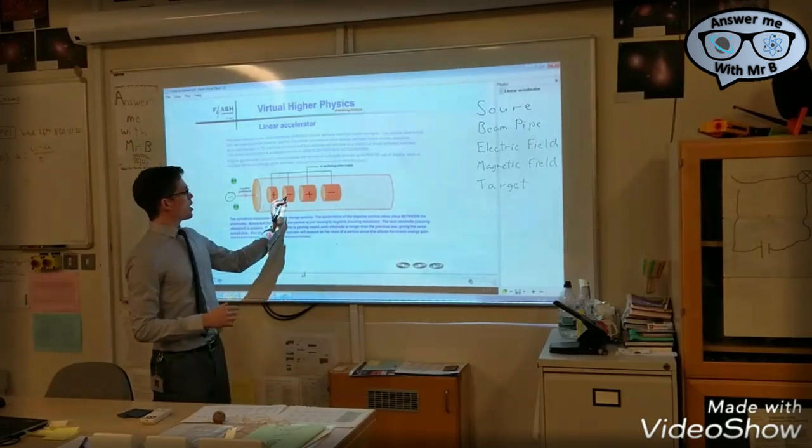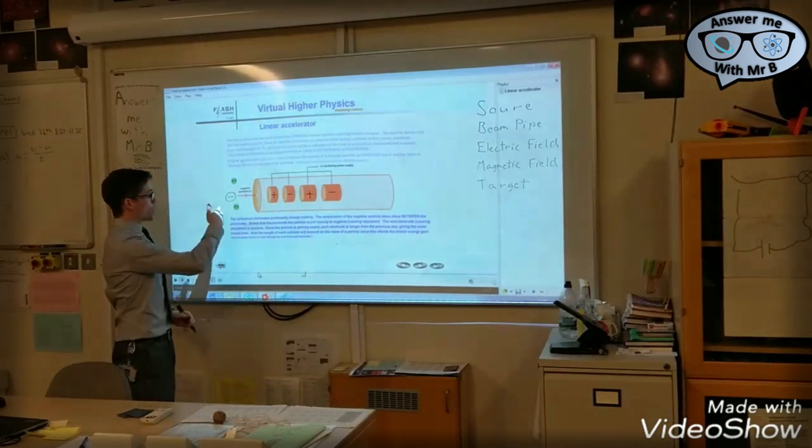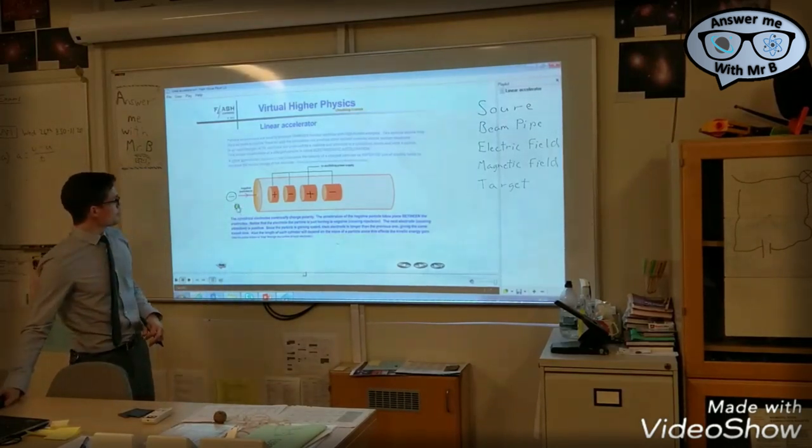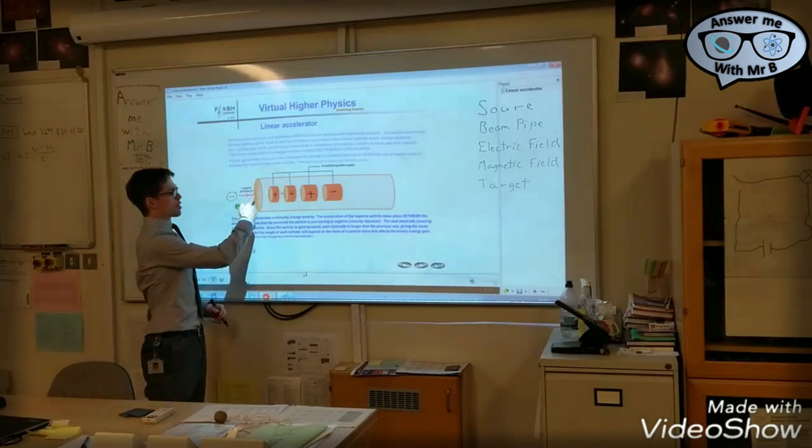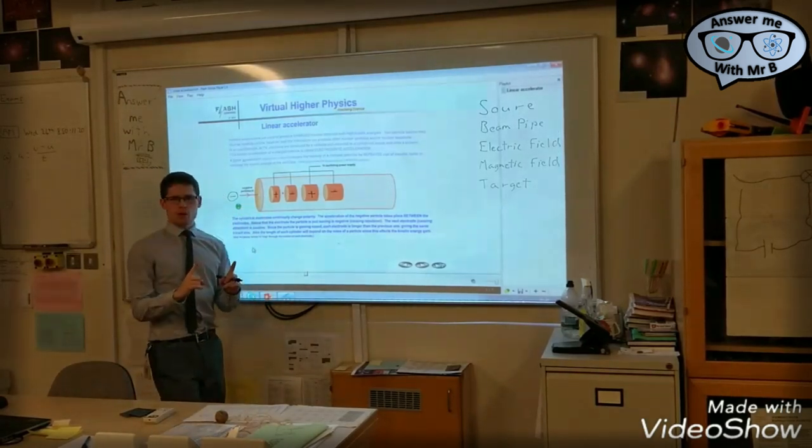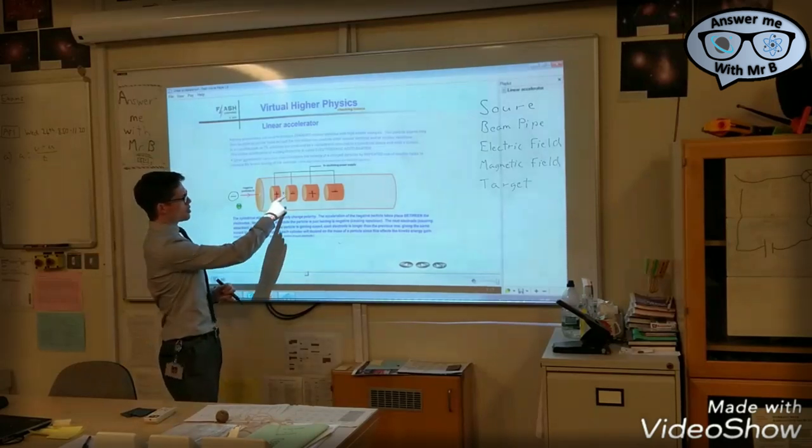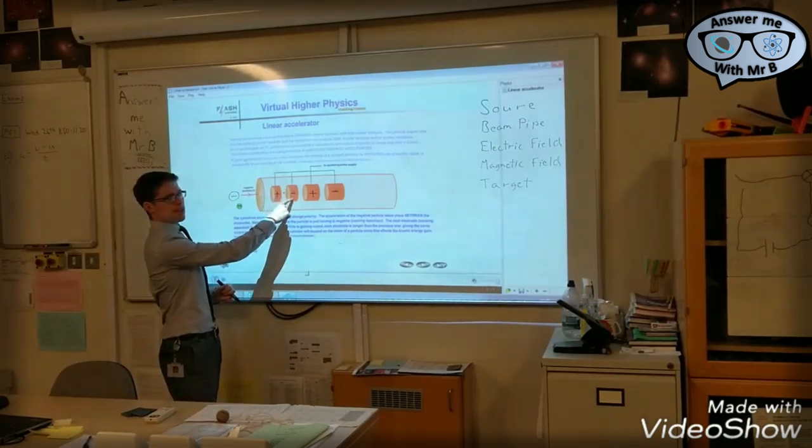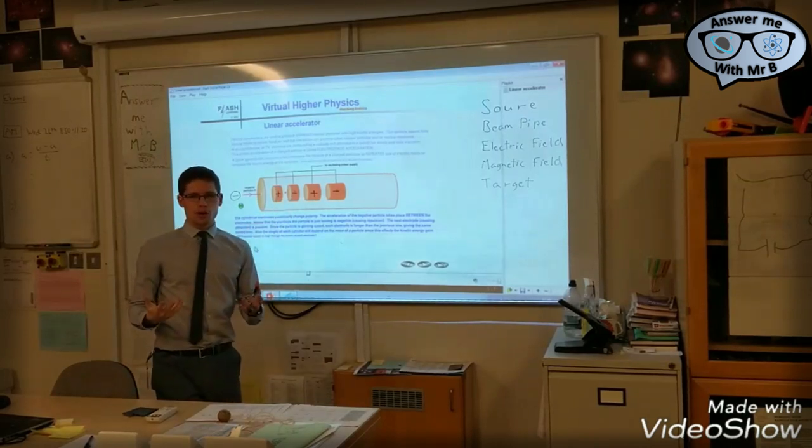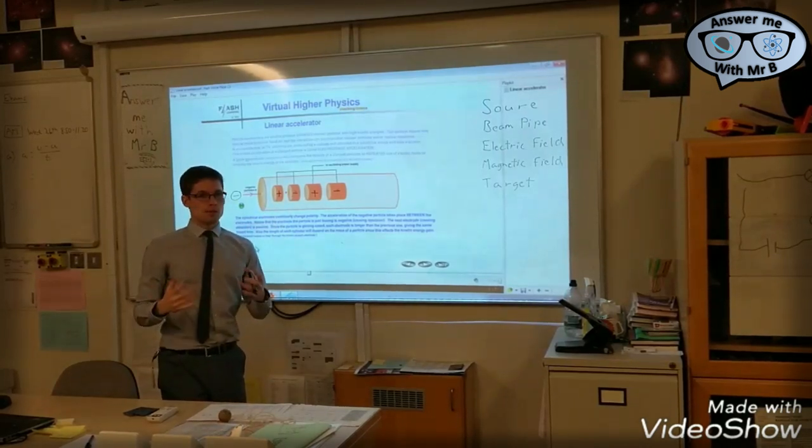Okay, so positive negative, positive negative. So when I send my electron into the tube, it is attracted towards this positive charge. It's actually accelerating. But then we have a problem. Because now it's approaching something that's negatively charged. So you're about to undo all the good work that you put in.